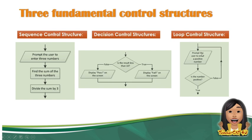For the loop control structure example: prompt the user to enter a positive number. If I enter 10, 'Is the number positive?' — true, so it exits. But if I enter negative 1, it is false, so it loops back up. Then if I enter negative 10, it is still false, so it loops back again. As long as the given condition is not satisfied, it keeps returning to the prompt. That is the loop control structure.